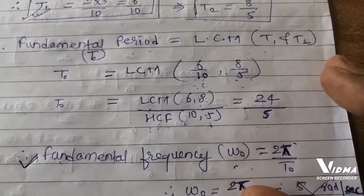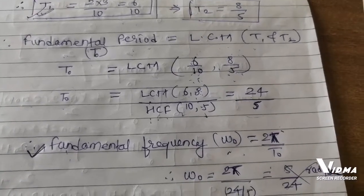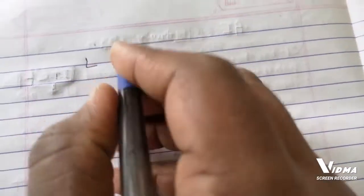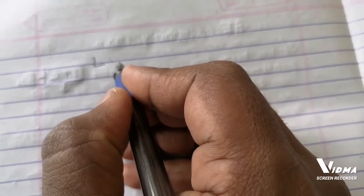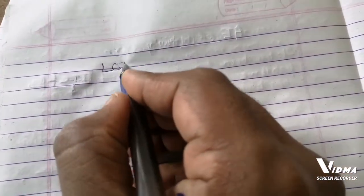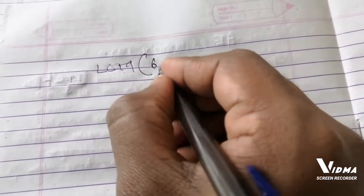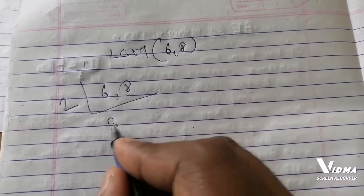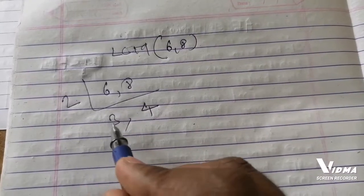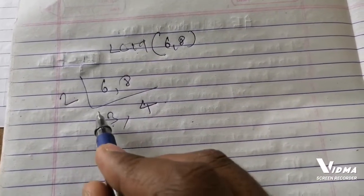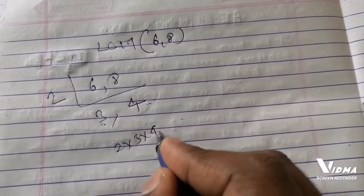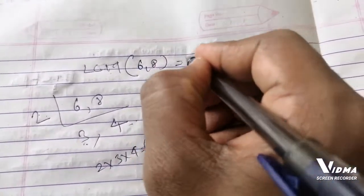Let us calculate the LCM of 6 and 8. This is something you may have studied in primary education. We have: 2×3 = 6 and 2×4 = 8. Since 3 and 4 are not further divisible by any common number, the LCM is 2×3×4 = 24. So the LCM of 6 and 8 is 24.